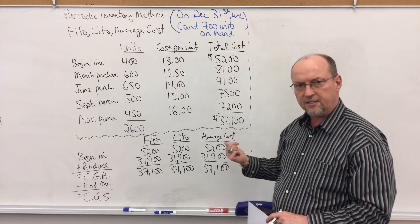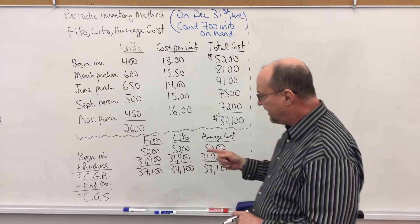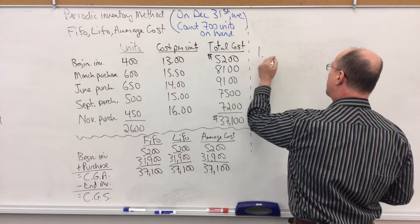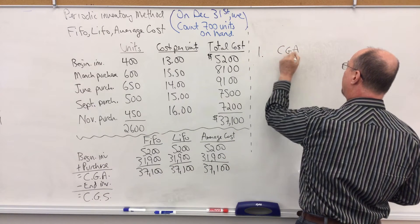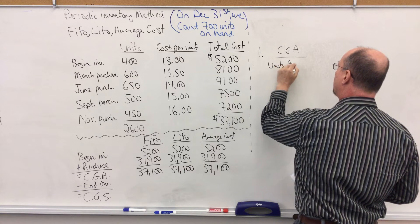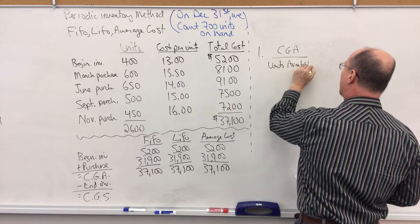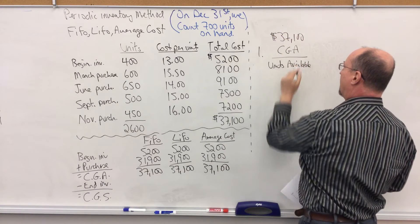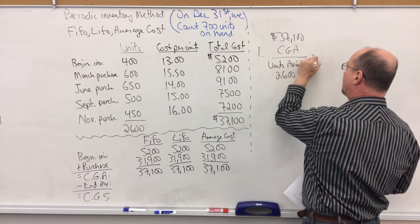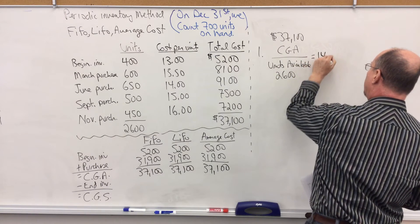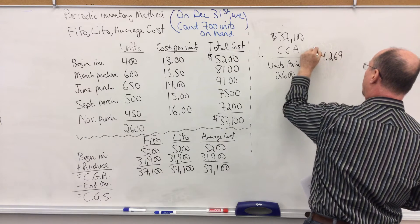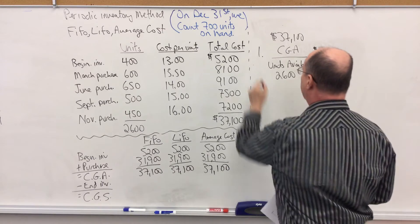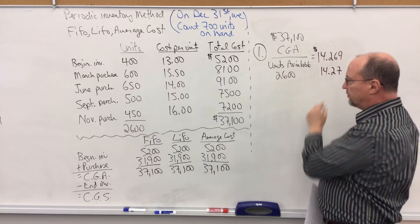This is really the easiest of the three methods. To calculate ending inventory and cost of goods sold, there are two steps. Step one: take your cost of goods available and divide it by the units available. Cost of goods available, $37,100, divided by 2,600 units equals $14.269 — let's just call it $14.27.